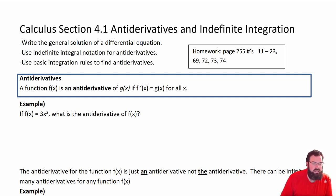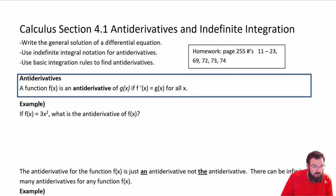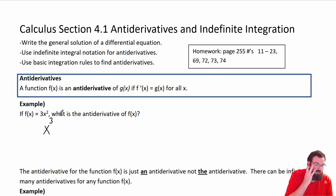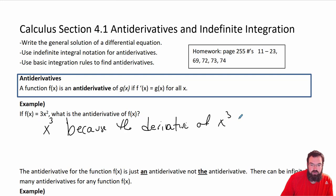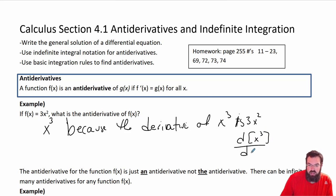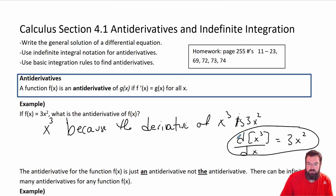So anti-derivative: the function f of x is an anti-derivative of g of x if f prime is equal to g for all x. Now what does that mean? So if f of x is equal to 3x squared, what is the anti-derivative of f of x? That means it's going to be x to the third, because the derivative of x to the third equals 3x squared. So the derivative of x to the third with respect to x is equal to 3x squared — that's your proper notation.